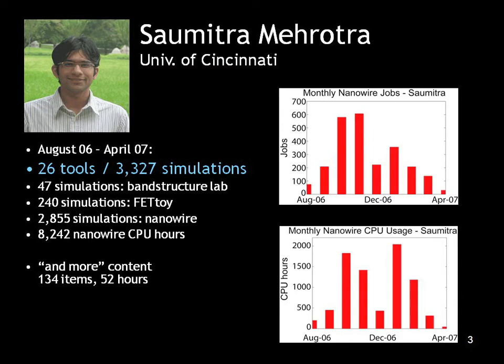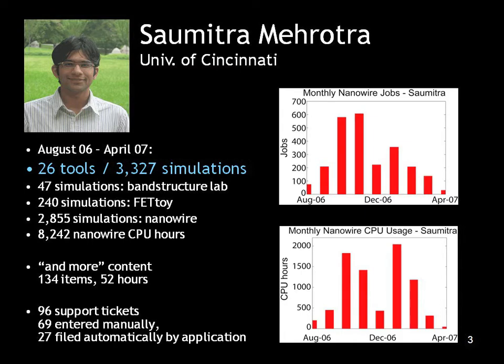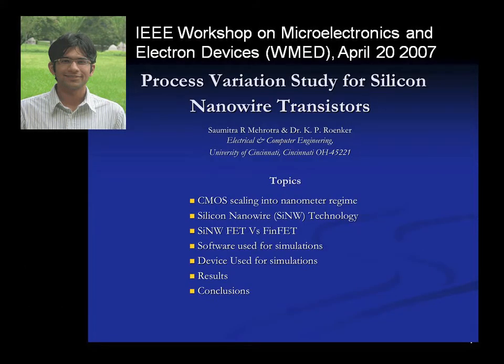He did more than just look at tools. He spent about 52 hours on 134 items on the NanoHub, really educating himself on how to use these tools and learn about the theory. He filed some 96 support tickets — many of them were filed automatically when a tool died. Then come April, it quieted around him a lot because he had something really exciting: he went through his first IEEE conference and gave a presentation on process variation study for silicon nanowire transistors. That's why he was running so many simulations.